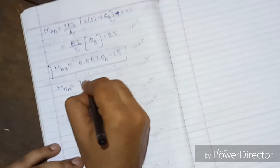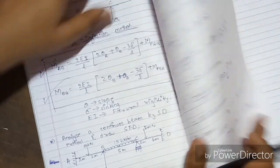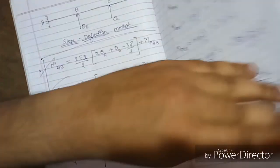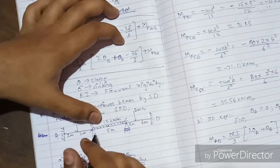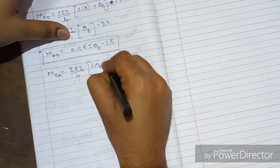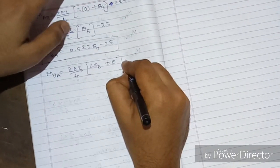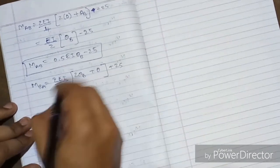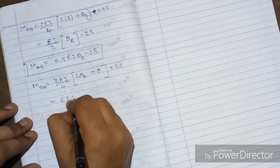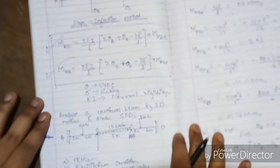For M_BA: L is still 4. M_BA = (2EI/4)(2θ_B + θ_A) + MF_BA. Since θ_A = 0 and MF_BA = +25 kN·m, on solving we get M_BA = EIθ_B + 25.